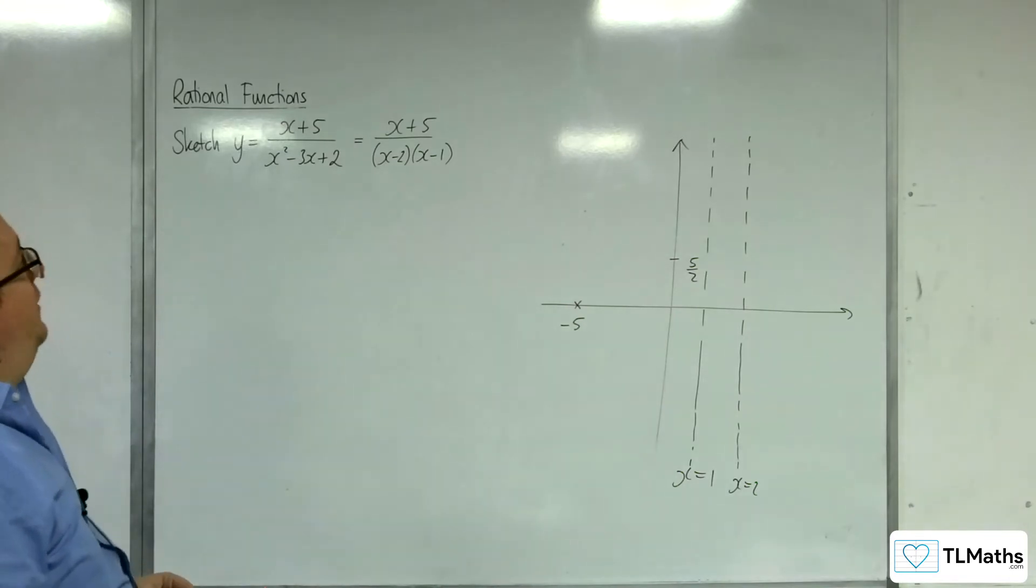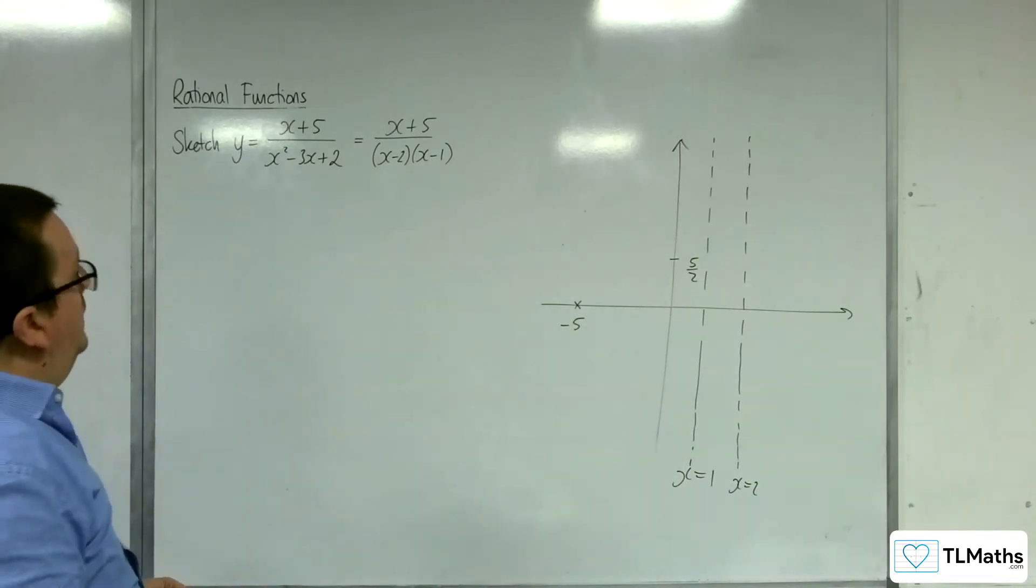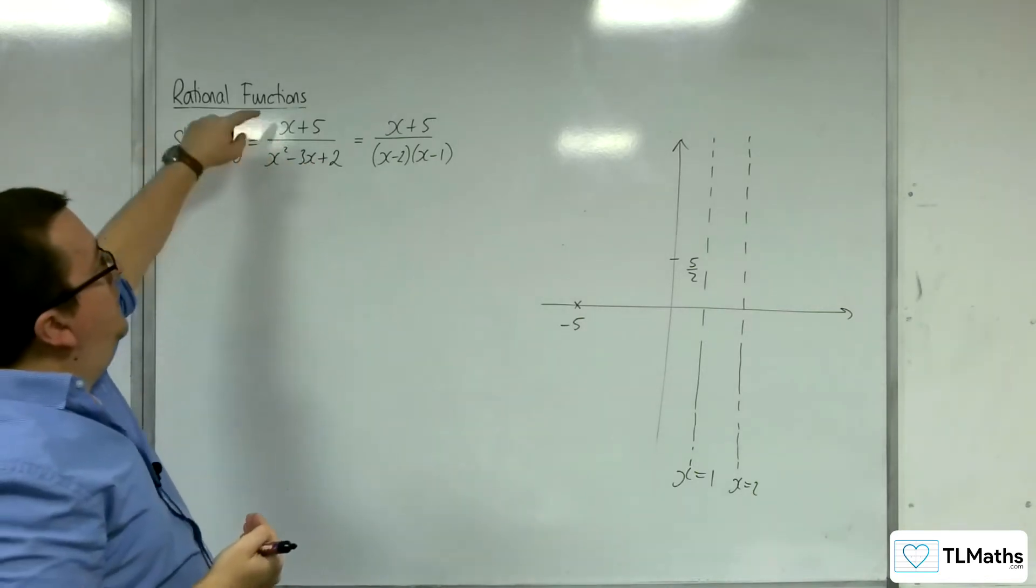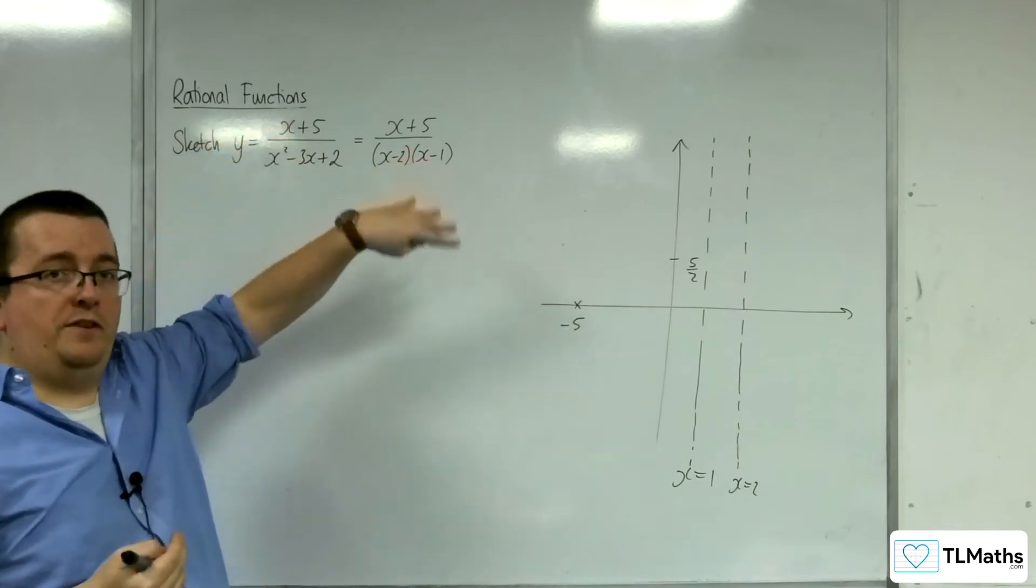And how about a horizontal asymptote? Well, the horizontal asymptote in this case, because you've got the numerator is of a lower order than the denominator, that means that the horizontal asymptote will be y equals 0.